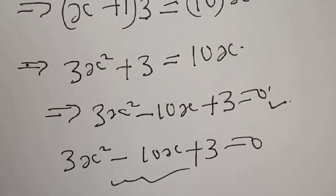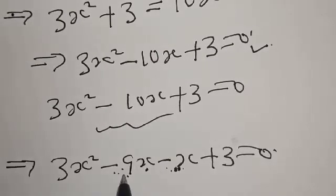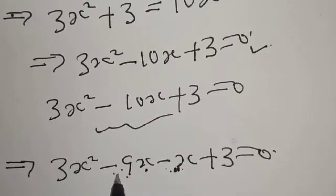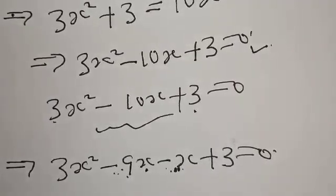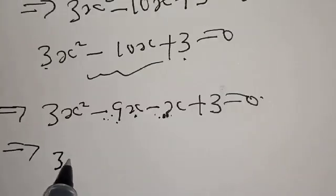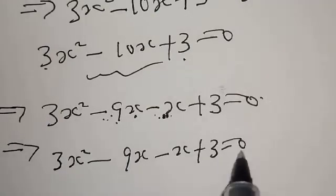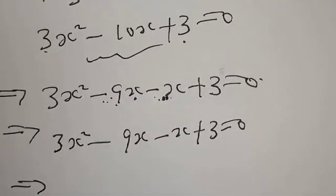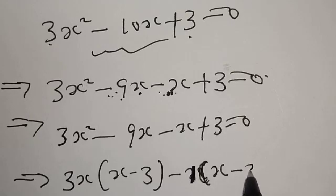We have 3x squared minus 10x plus 3 is equal to 0. We split the middle term: minus 9x minus x gives minus 10x. The product check: minus 9 times minus 1 is plus 9, which equals 3 times 3. So we rewrite as 3x squared minus 9x minus x plus 3 is equal to 0.